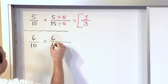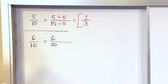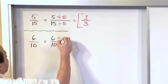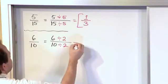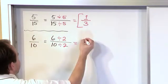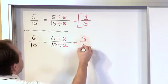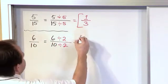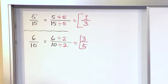So let's go ahead and do 6/10 and we'll divide the top by 2 and we'll divide the bottom by 2. So 6 divided by 2 is 3. 10 divided by 2 is 5. So I have 3/5 and that's the final answer on that one.